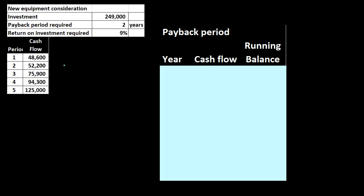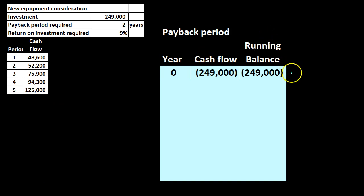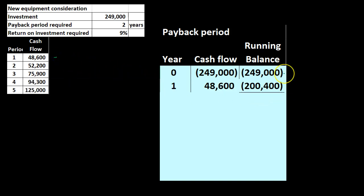We have to do a little bit more work in order to do that. Remember, the payback period does not consider the time value of money — we're looking at the time at which the cash flows received will equal the initial investment. One way to do this is to look at each year individually: we break out the year, the cash flow, and then we have a running balance. For year zero, the running balance is of course the same as the initial investment — $249,000.